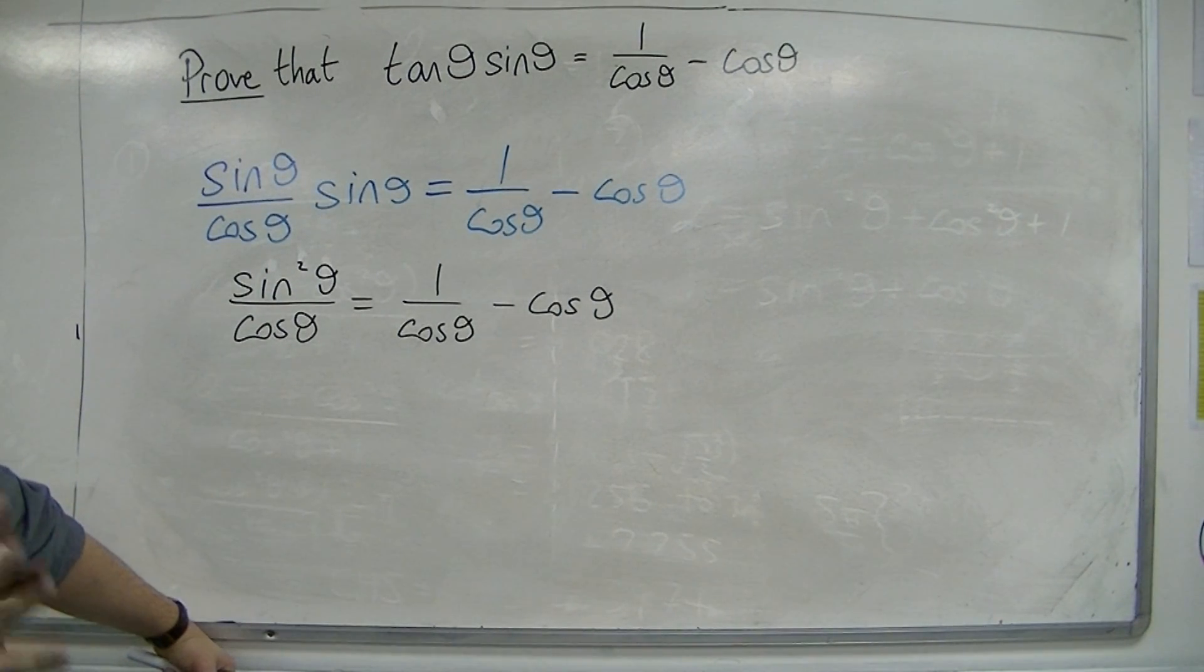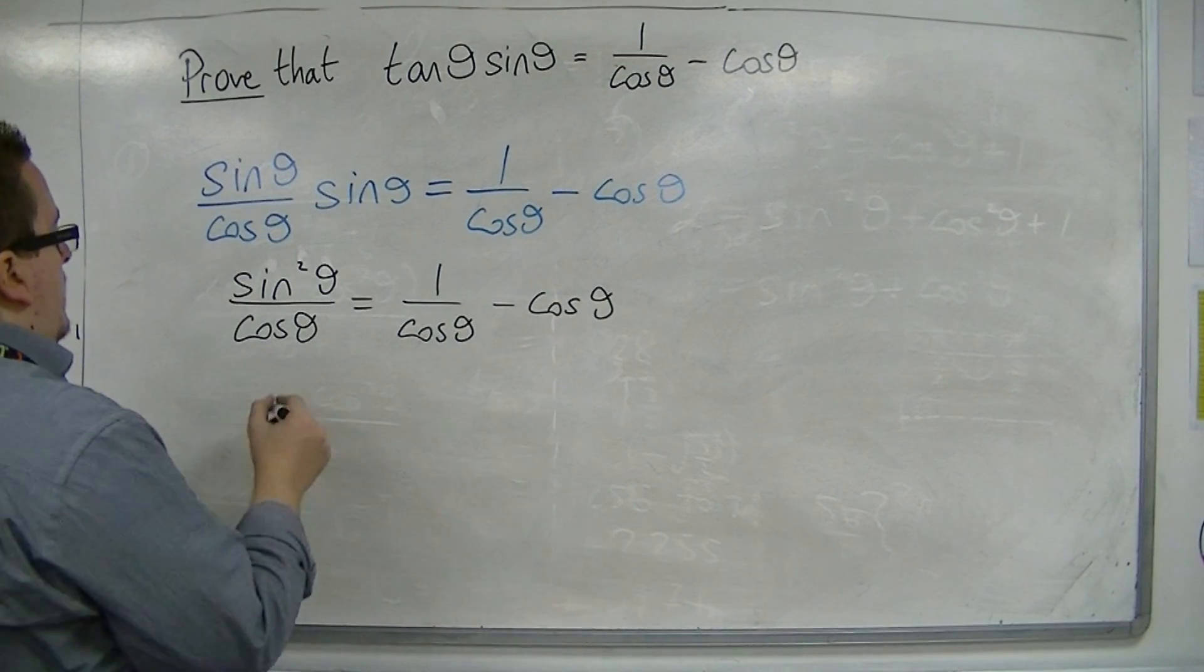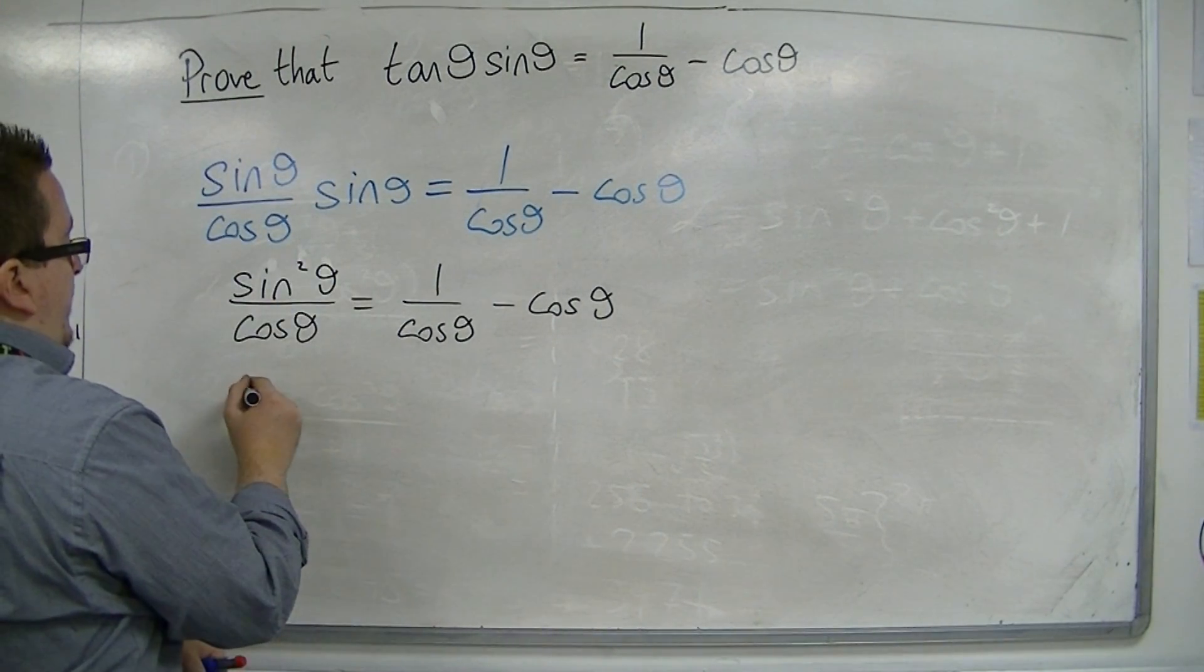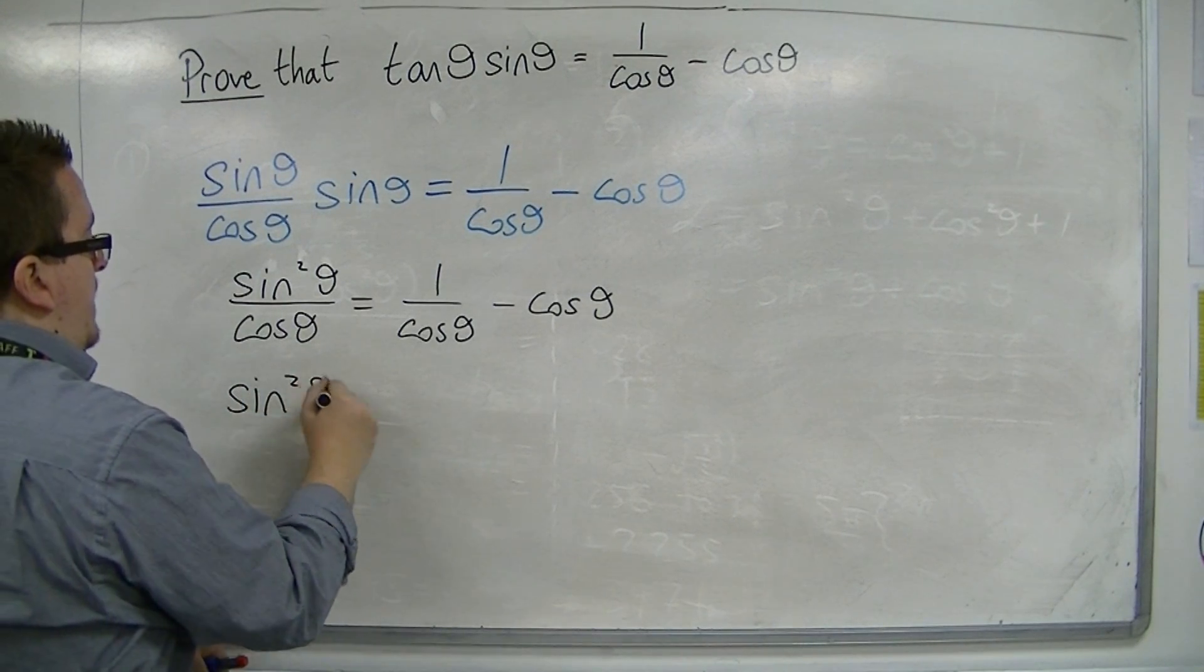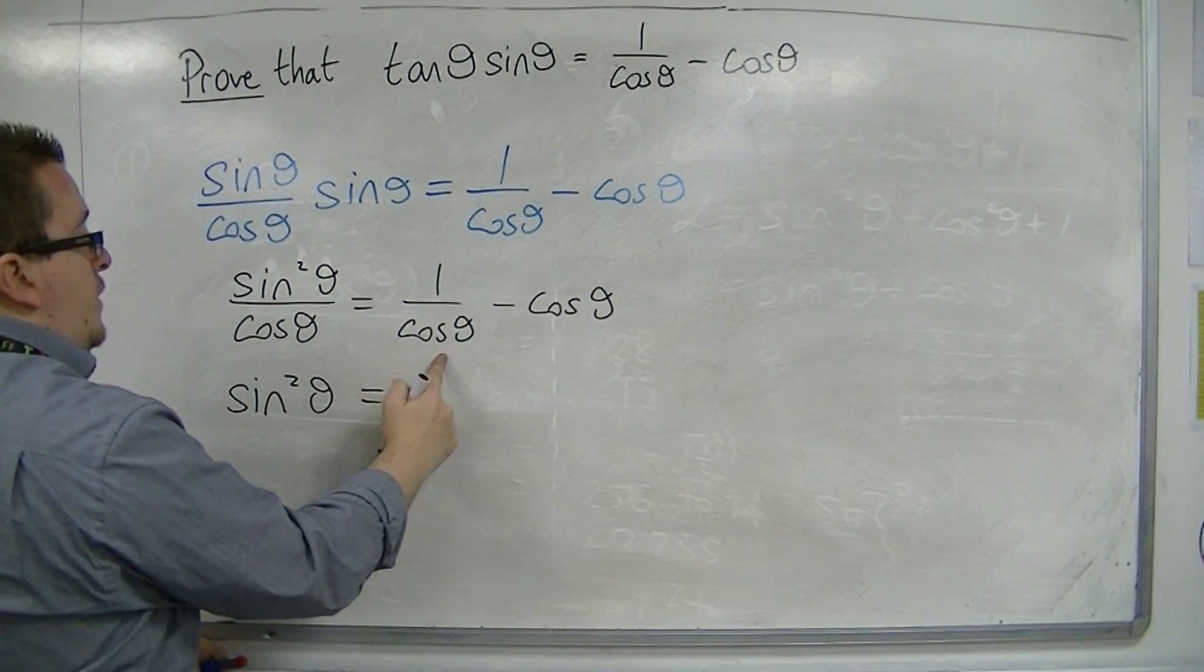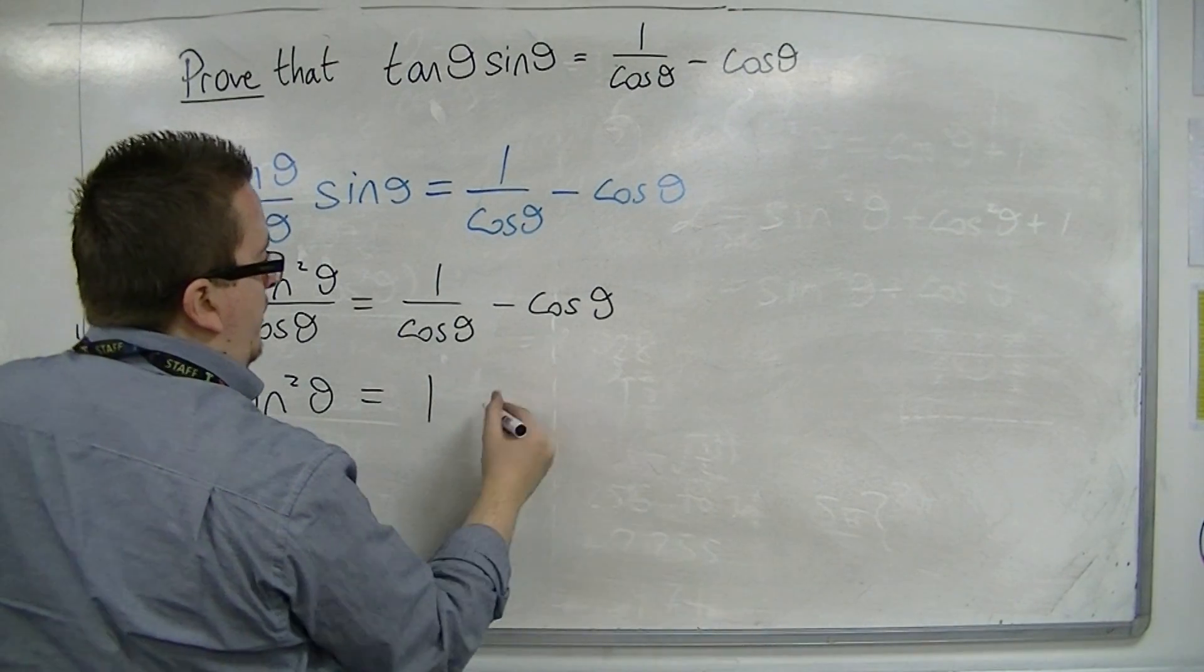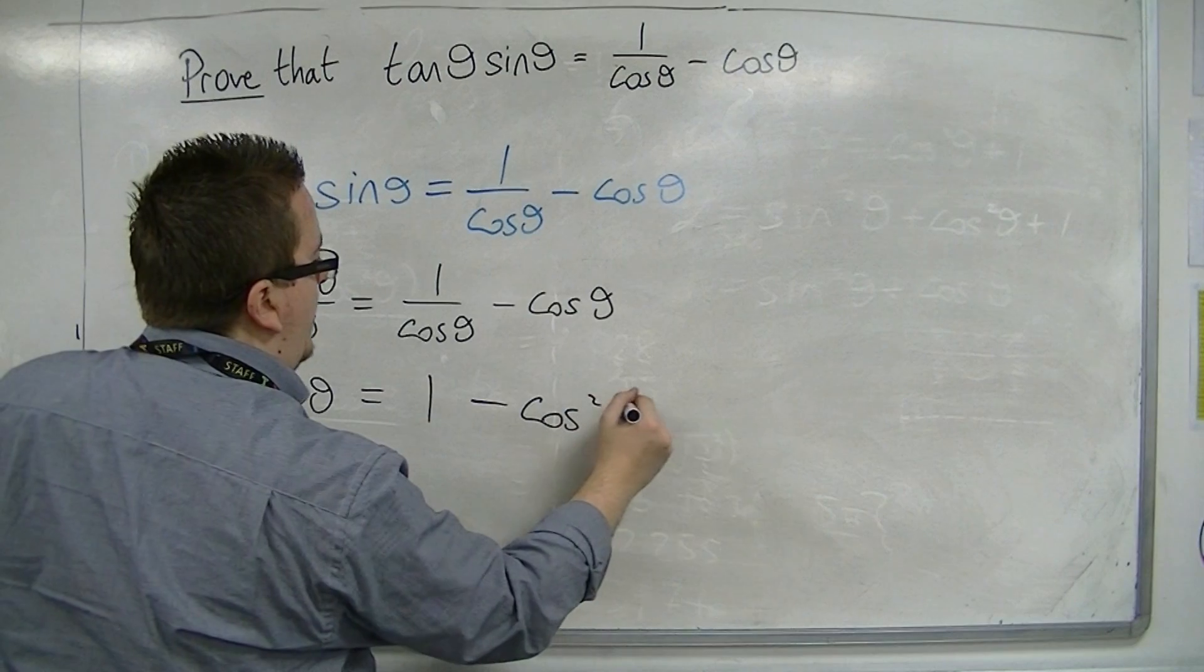Now, if I multiply through by cos theta both sides, sin squared theta over cos theta will just become sin squared theta. 1 over cos theta multiplied by cos theta is 1, and cos theta times cos theta is cos squared theta.